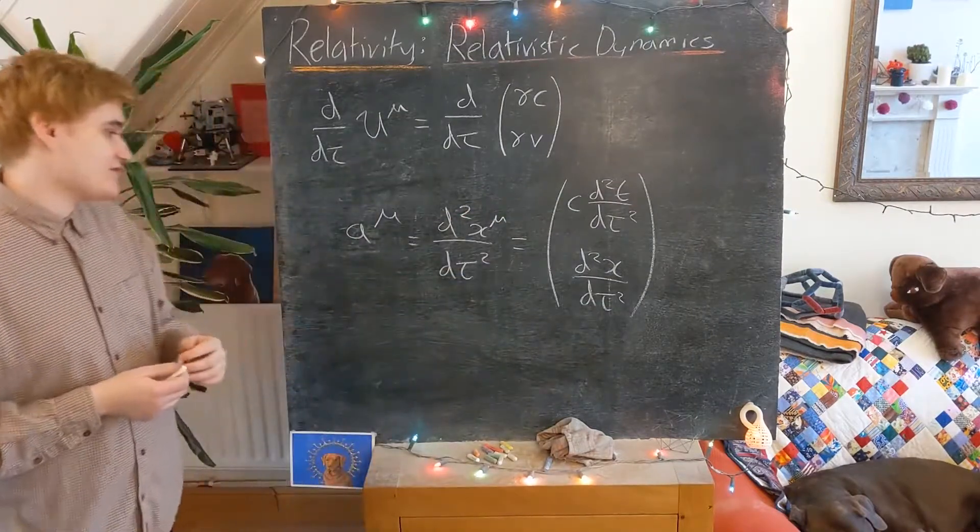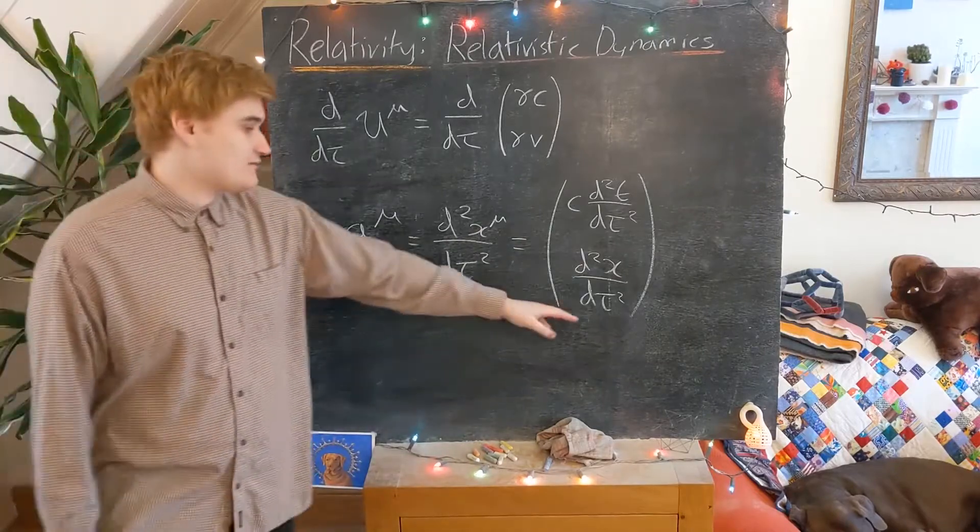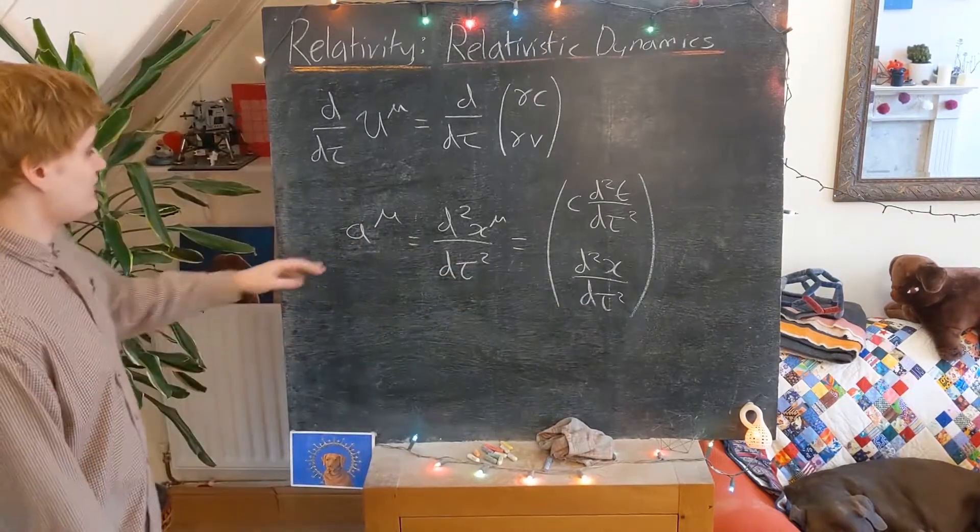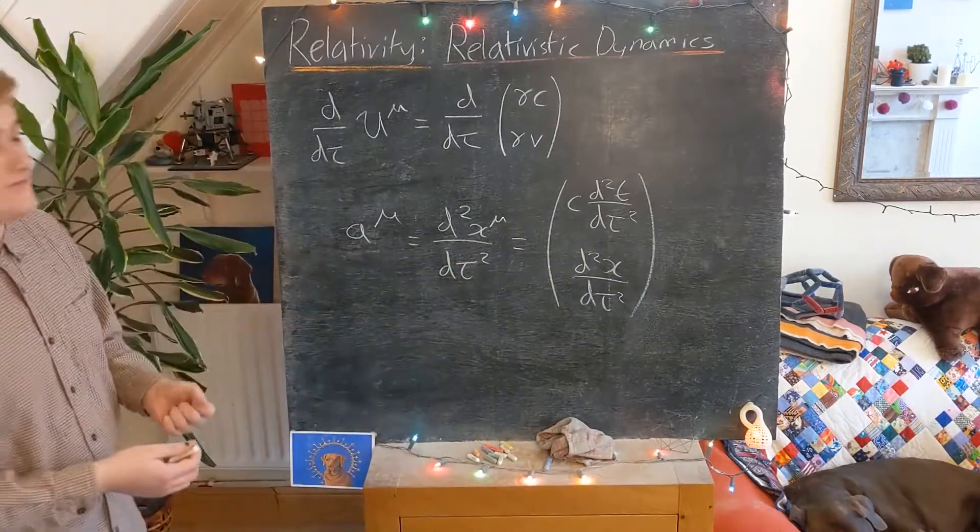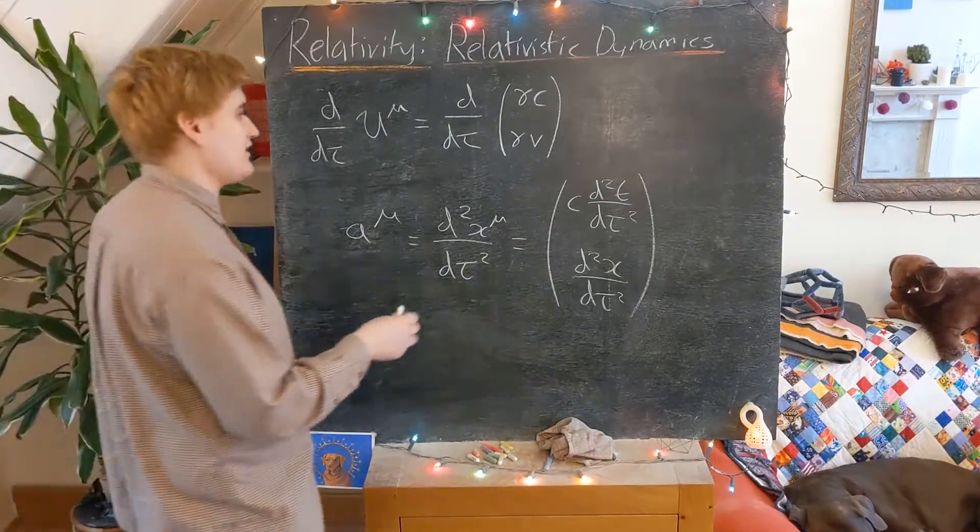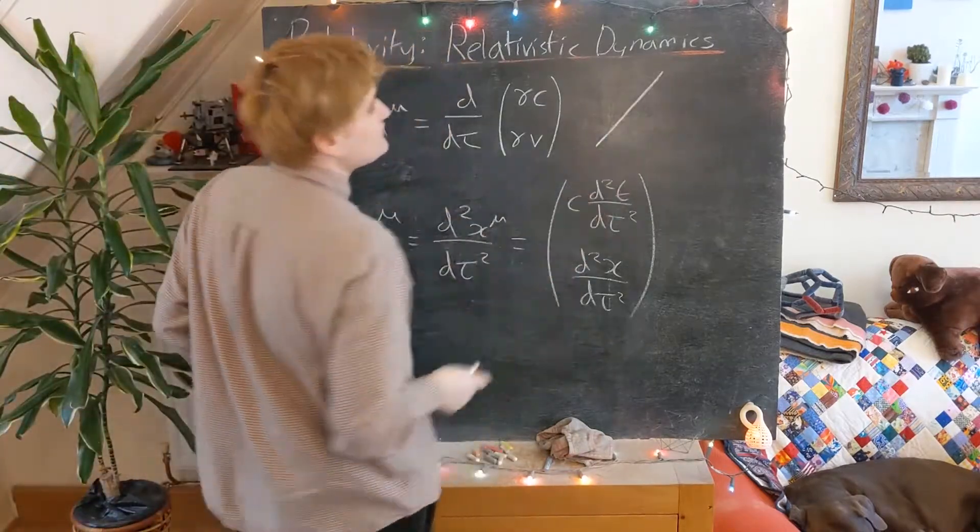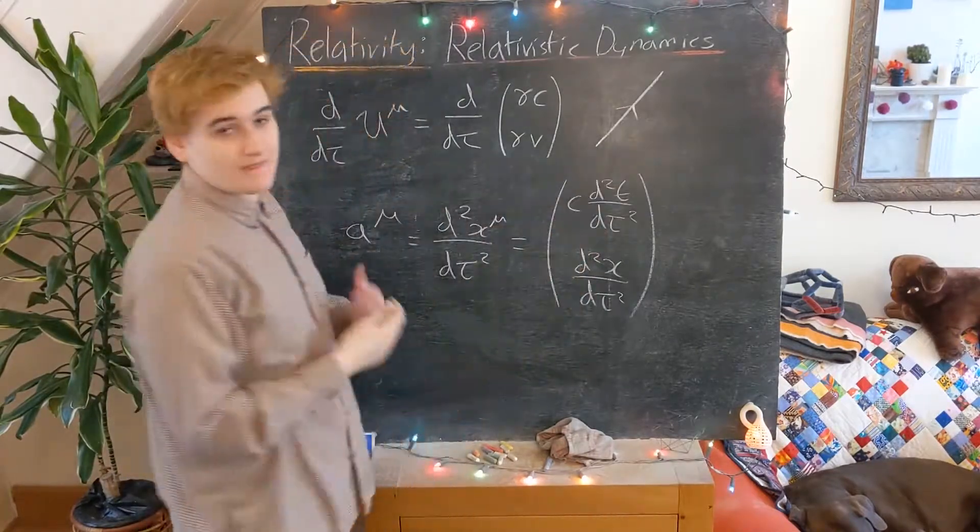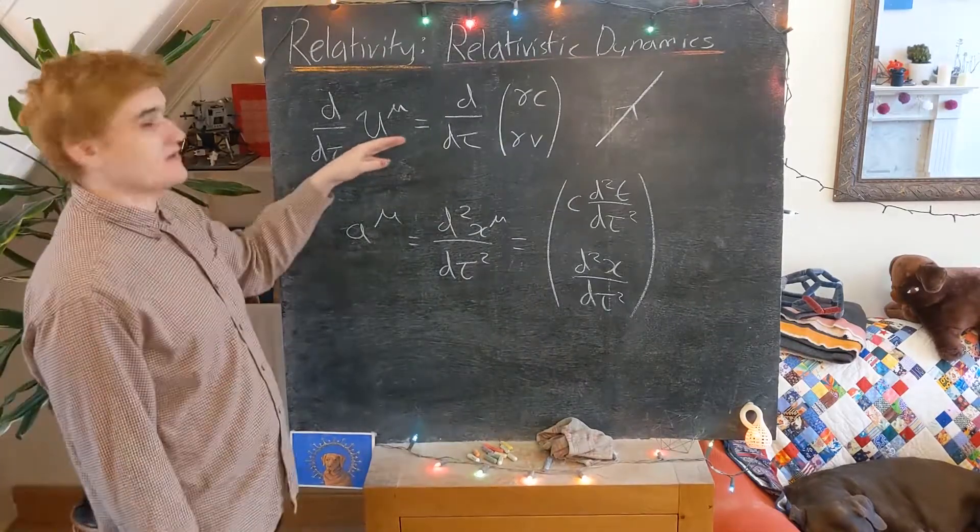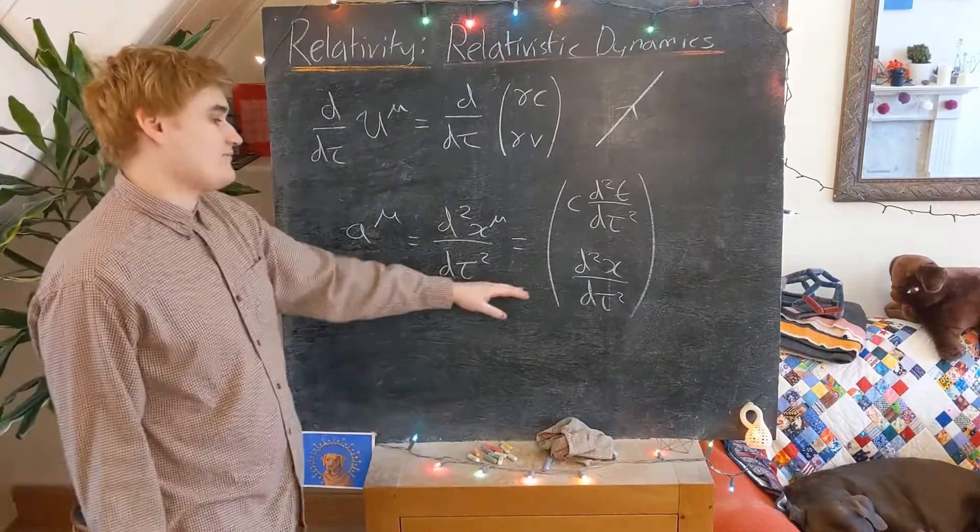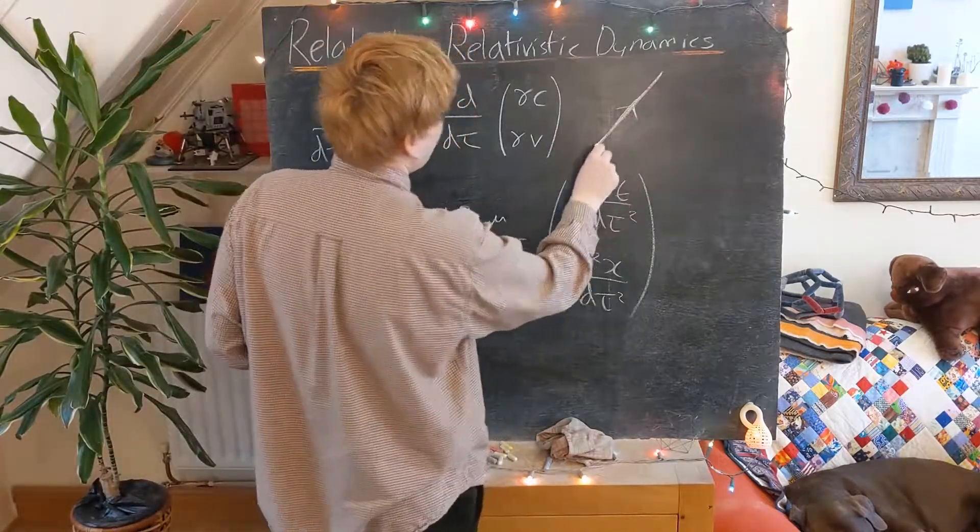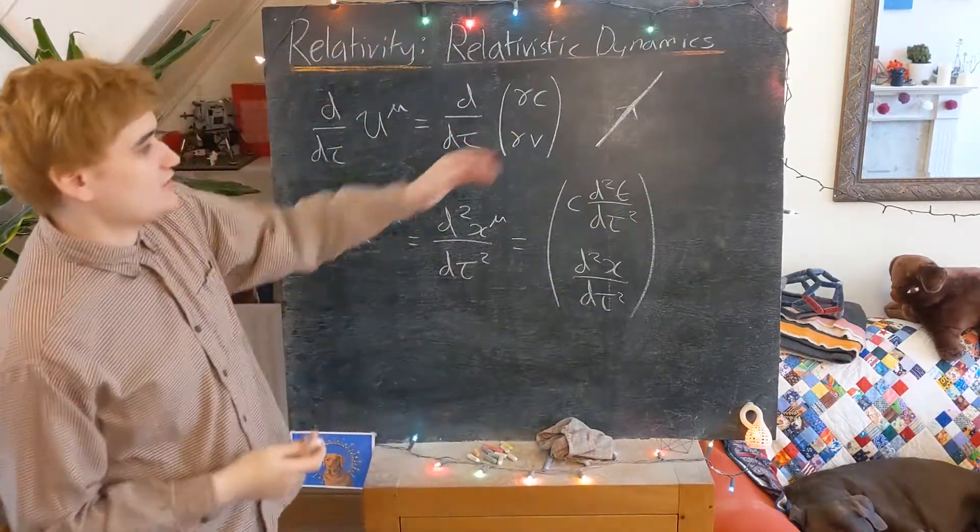When we start talking about general relativity, we're going to start seeing that second derivatives are quite very connected with curvature. And so one way to view the 4-acceleration is it's effectively measuring how curved your world line is. We're going to see that straight world lines correspond to particles that move with no 4-acceleration or just a constant 4-velocity. So they are unaccelerated particles that just move in inertial reference frames that have constant velocities.